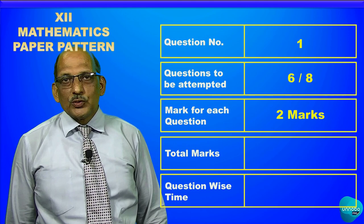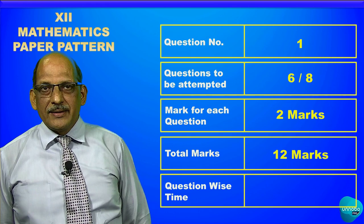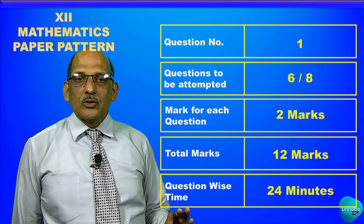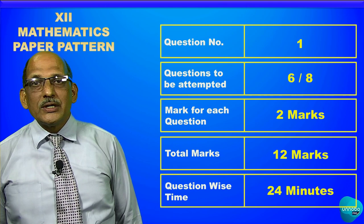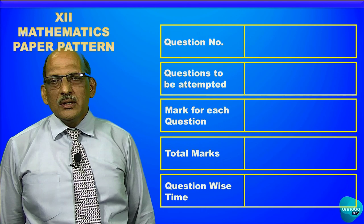Six into two will give 12 marks, so question number one is for 12 marks. To complete question number one, the board has given 24 minutes. Students have to complete question number one in 24 minutes.